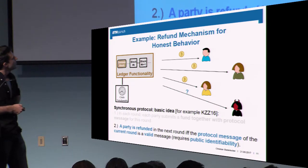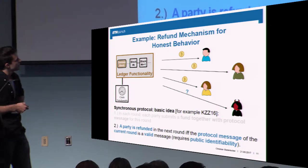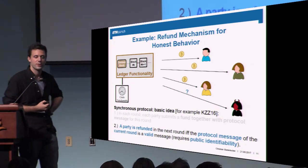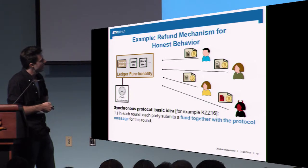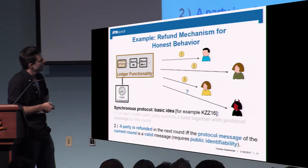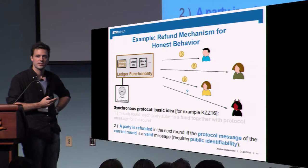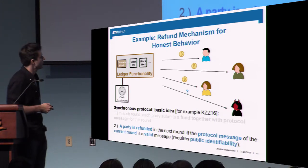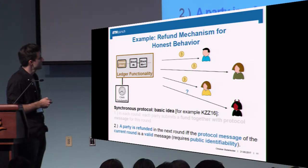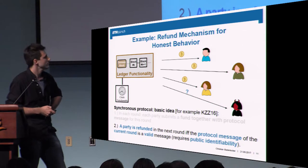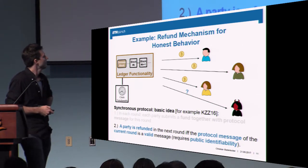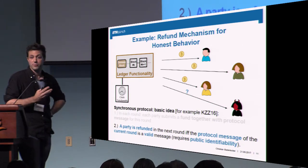Dishonest behavior is kind of punished and honest behavior is encouraged. Even worse for Eve: if the protocol message she submitted led to an abort, she will be identified and not receive her money back. Even worse for her and better for the honest parties, they will receive her deposit. This kind of favors honest behavior.